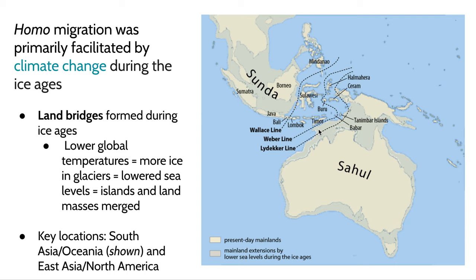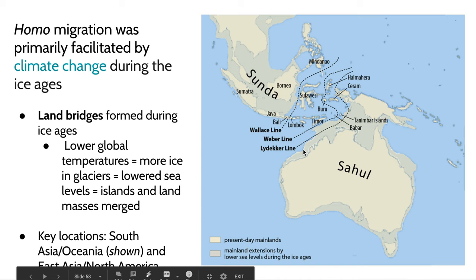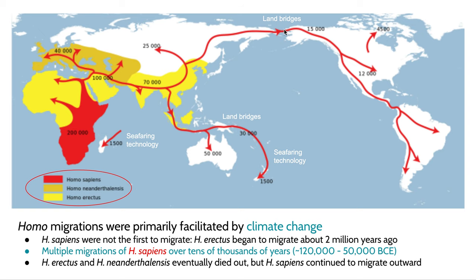Key land bridge locations formed in South Asia, East Asia, and North America. Most notably, there was a bridge connecting Alaska and Russia, allowing humans to pass from Eurasia into what is now North America. These land bridges forming during glacial periods allowed populations to cross previously unpassable areas.